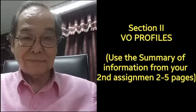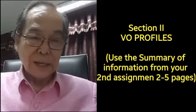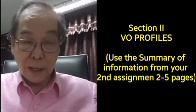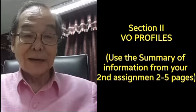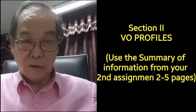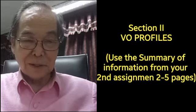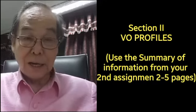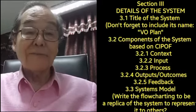Section 2 is profiles of the organization — profiles of your farm, college, or whatever you are using. You have to summarize the details of your VO and incorporate it into 2 to 5 pages, not more than that. Then Section 3 covers the details of the system.